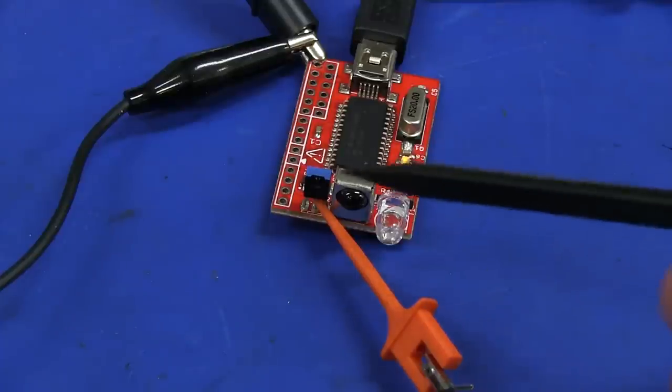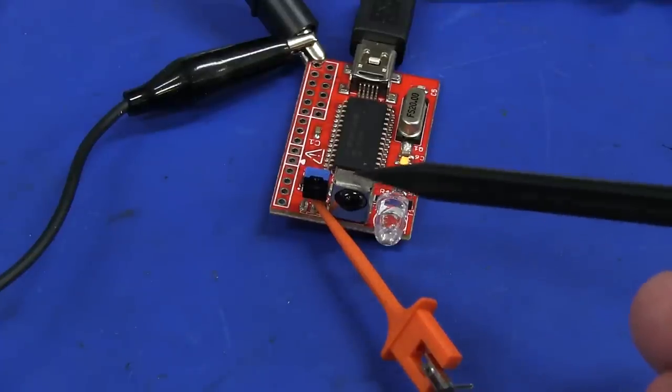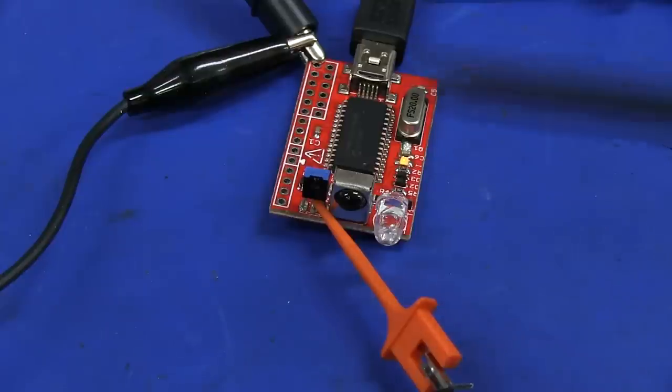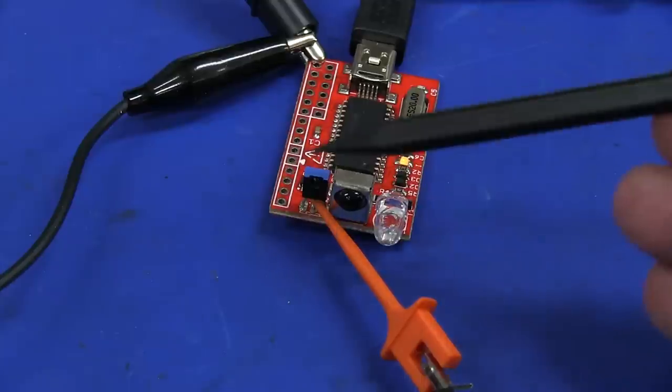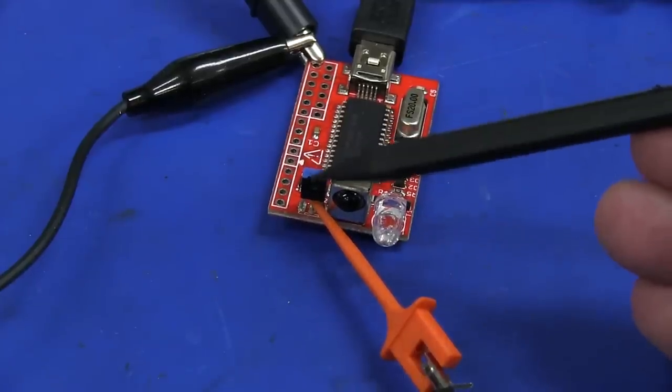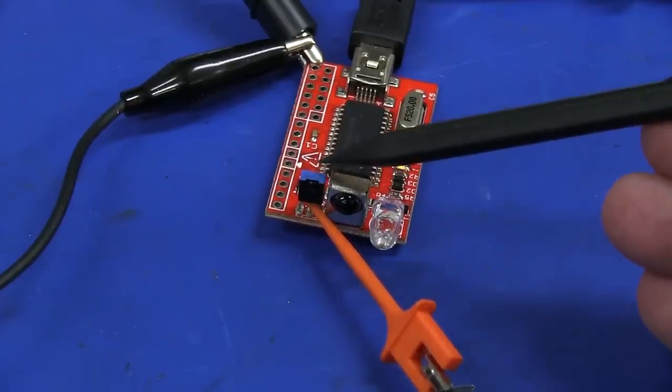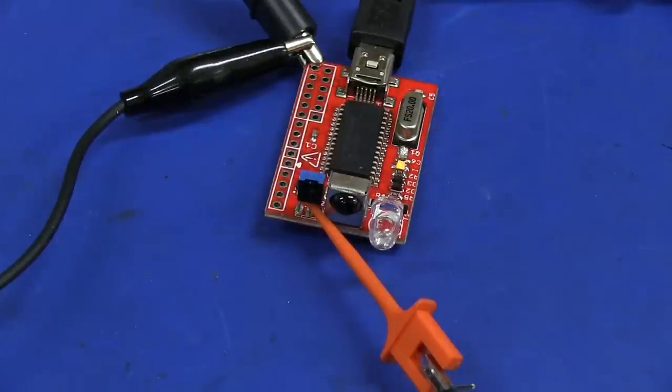And just be aware that there are different carrier frequency modules. But the most common type that you're going to deal with is the 38 kilohertz carrier frequency. And we'll actually be able to measure that because we'll be getting the raw data, carrier data, out of this photodiode here.